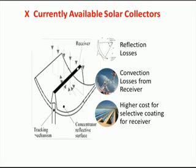The currently available solar collectors use the principle of reflection of light and have reflection losses. In this collector, the collector and receiver is open. Hence, they face the problem of reflection losses. And the receiver is open.